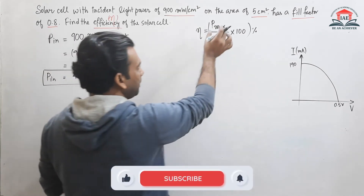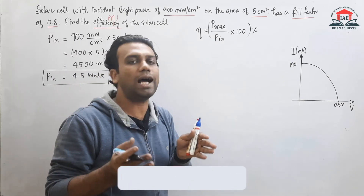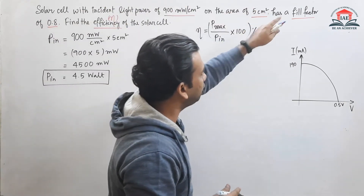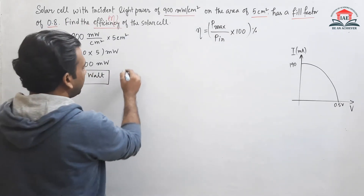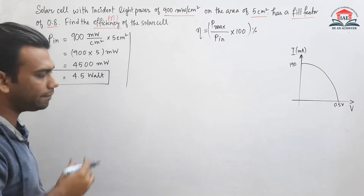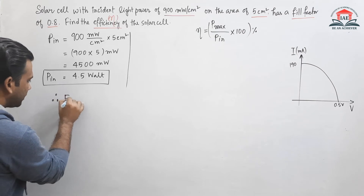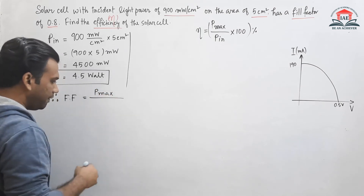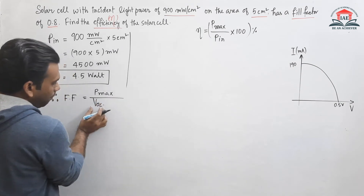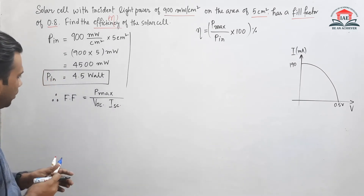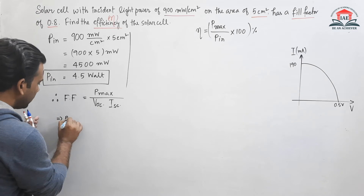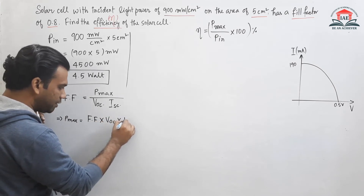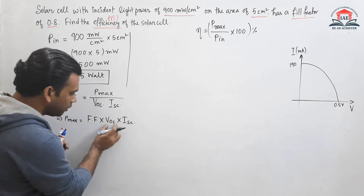Now we also need P max. P max means how much power we are extracting from the solar cell. The fill factor equation is: FF = P max / (Voc × Isc), where Voc is the open circuit voltage and Isc is the short circuit current. So if we want to find P max, we can write it as fill factor multiplied by Voc multiplied by Isc. We need to find Voc and Isc from the graph.